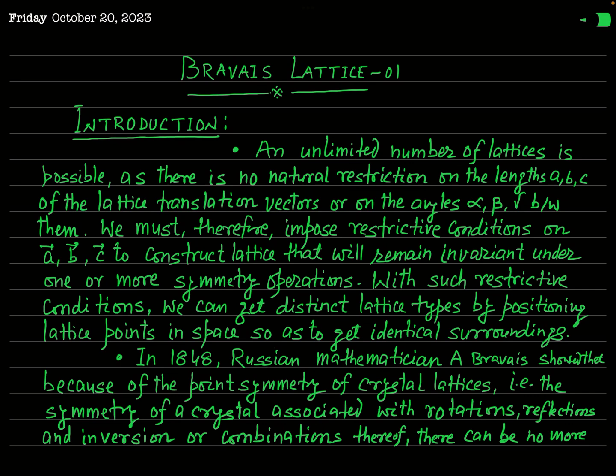How can the lattice be classified? What are the different types of plane lattice, or two-dimensional lattice, or a space lattice? The shape of the unit cell depends on the magnitude of the translational vectors A, B, C and the three interfacial angles alpha, beta, and gamma. Since there is no natural restriction on the length of these translational vectors or on the values of the interfacial angles, it is obvious that there will be an unlimited number of lattices possible.